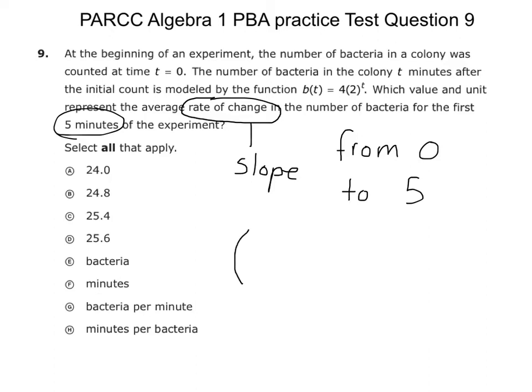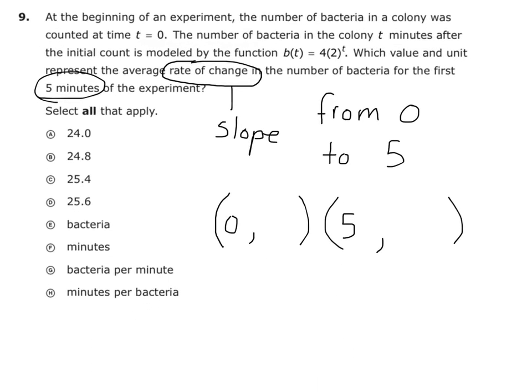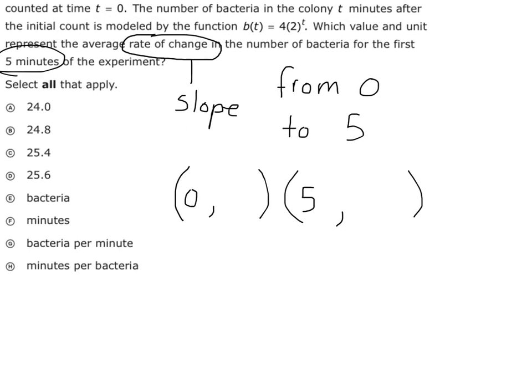Now here's how we can do this. My first point, I know my input is zero minutes, and I've got to find an output. And in my second point, I know my input is what? Five minutes. And I need to find an output. Now these all stand for t.